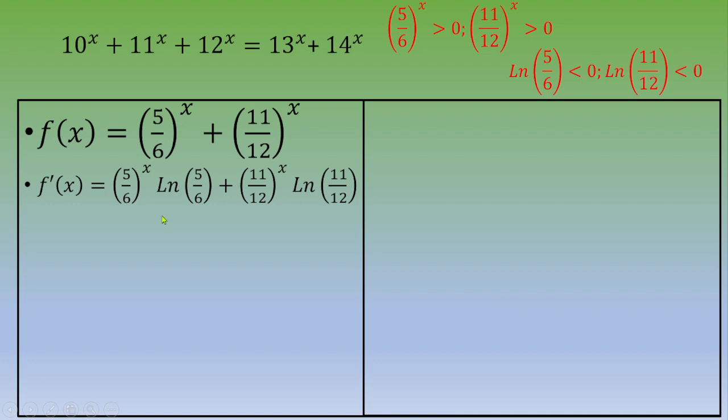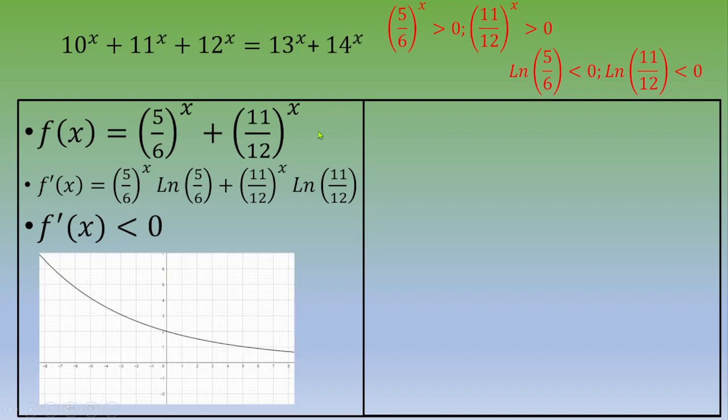So you can end up by saying that f'(x) is strictly below 0. That means the function f is a decreasing function. This is function f, and I draw this thanks to the software GeoGebra.